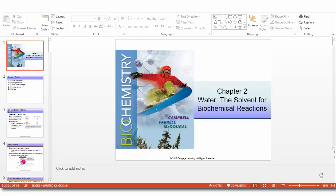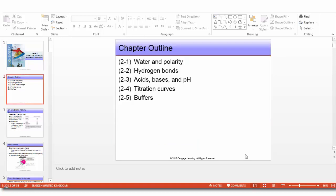Welcome to summer session 2020. We want to start with chapter 2, water, the solvent for biochemical reactions. As you know, water is the main component of most cells. Its geometry and properties as a solvent play major roles in determining the properties of living systems. This is the outline. We will talk about water and polarity session one, two hydrogen bonds, three acid bases and pH, then four titration curves and finally buffers.